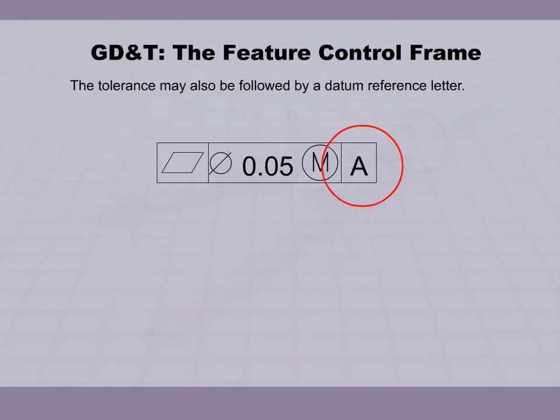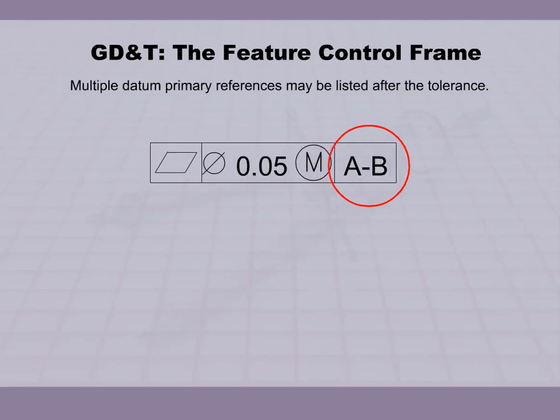The tolerance may also be followed by a Datum Reference Letter. Multiple Datum Primary References may be listed after the tolerance.